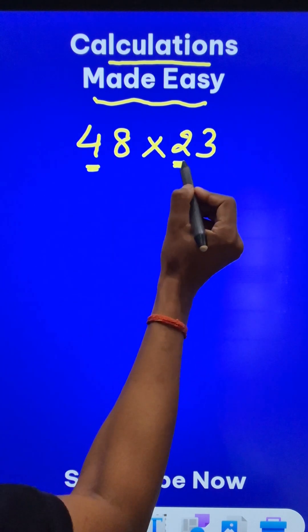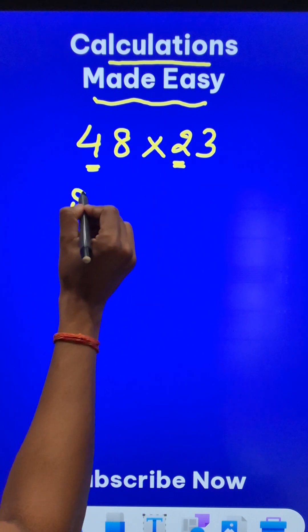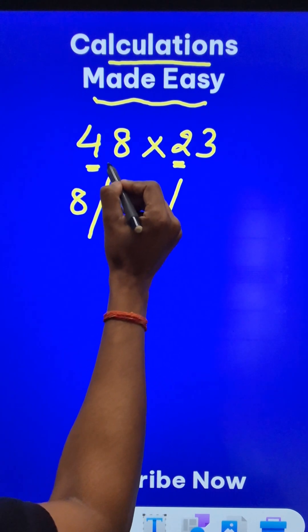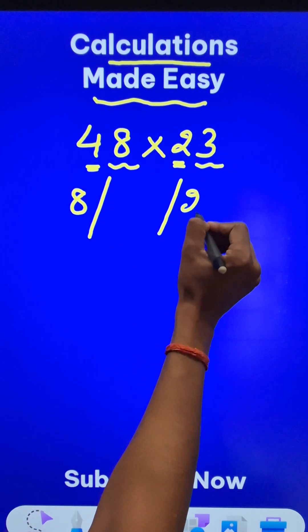If you multiply the first and first digit, you get 4 twos are 8. And then, let's leave some space in between. Let's multiply the last one and the last one here, 8 times 3 is 24.